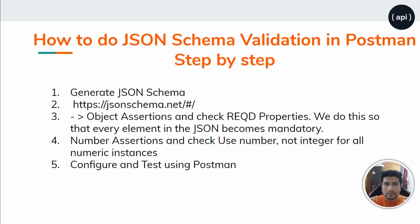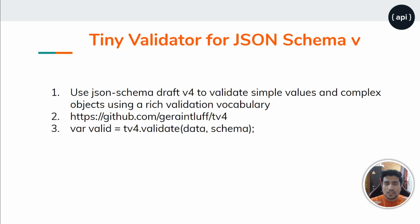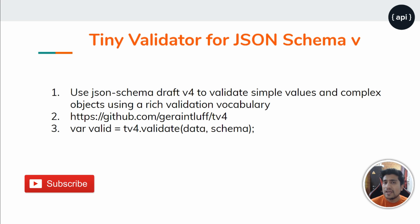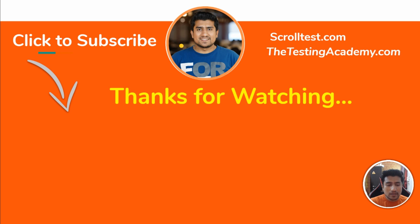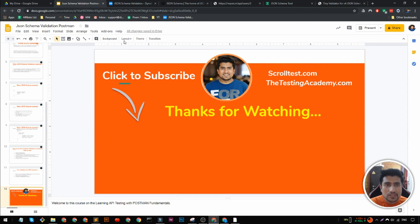I'm going to show you this in Postman. We're using a small library called Tiny Validator v4, which has a function where you can pass the schema as the expected result and the API response data as the actual result.